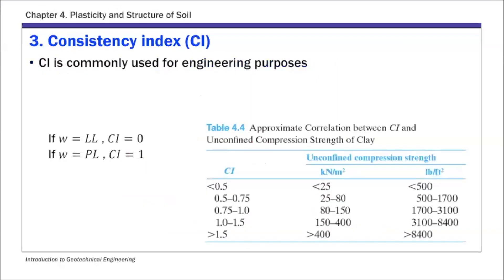The third one is called consistency index. CI is actually very similar to LI. It also describes the natural water content in relation to the plastic and liquid limit. The definition of CI is LL minus small W over LL minus PL.